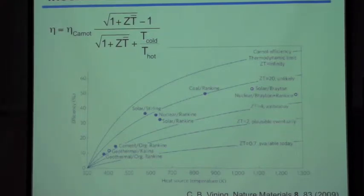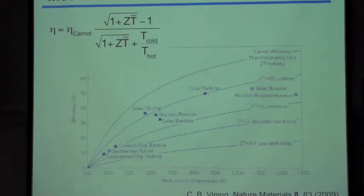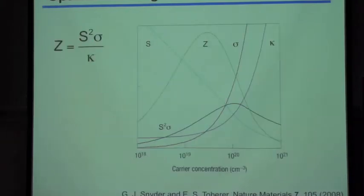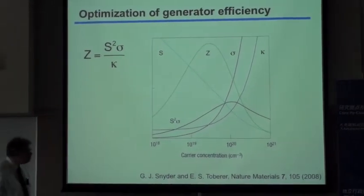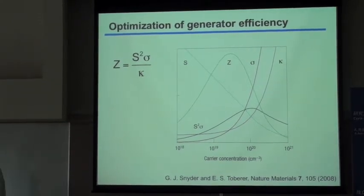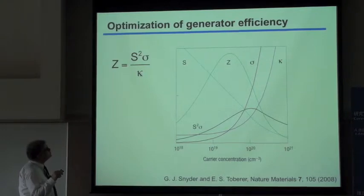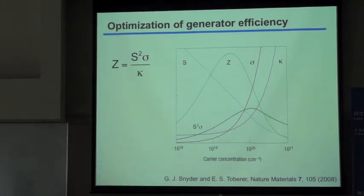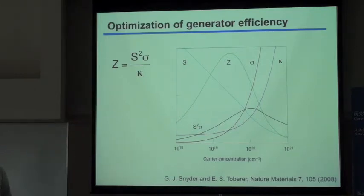So if you have the choice and can afford some mechanical movement, it will always be better to use a thermodynamic process that you can operate at the Carnot efficiency limit. There are other values given here like ZT of 4 and 20, but a ZT of 2 is the important near-term goal. This Z — one of the two factors in ZT — is given by the square of the Seebeck coefficient times the electrical conductivity, divided by the thermal conductivity.